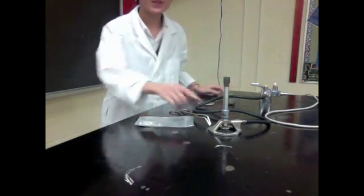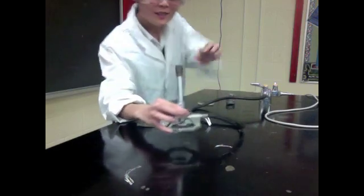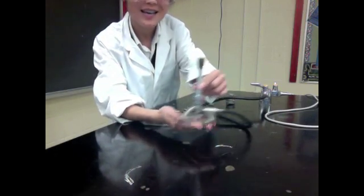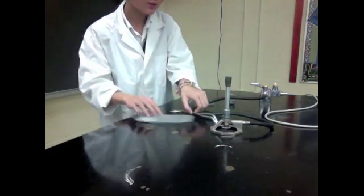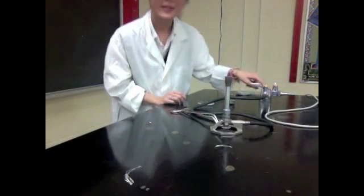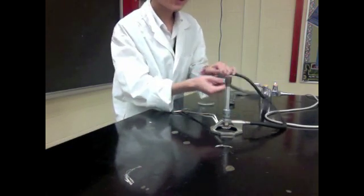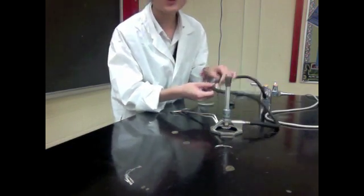We're also going to need a Bunsen burner, which looks like this. And the Bunsen burner is going to be connected to the gas valve here. Now, as you can tell, it's connected by a piece of rubber tubing.